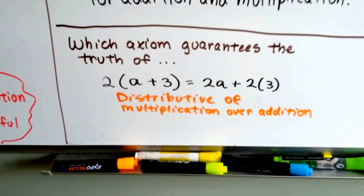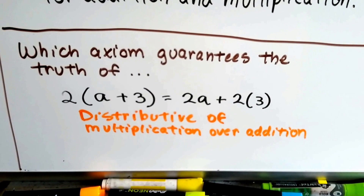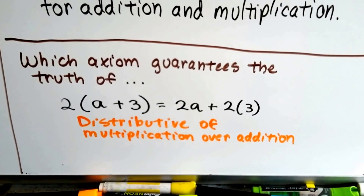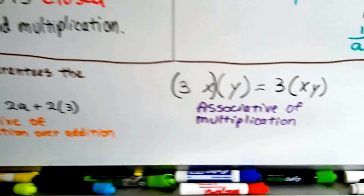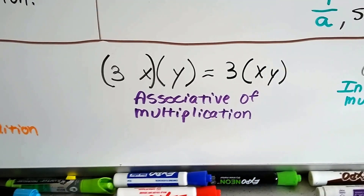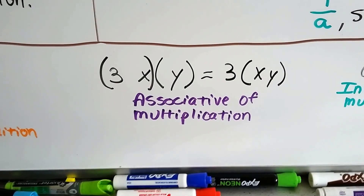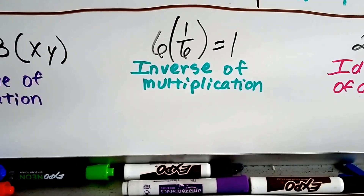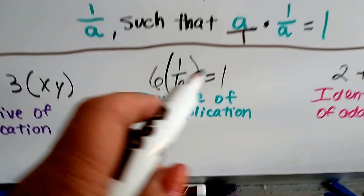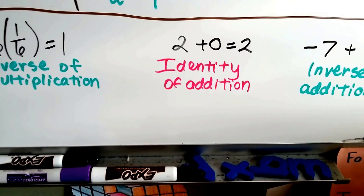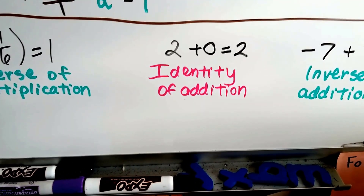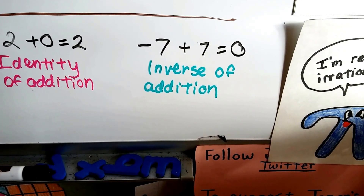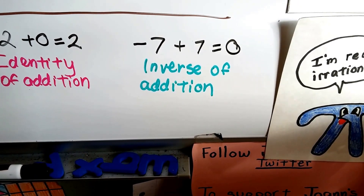So, which axiom guarantees the truth of this: 2(a + 3) = 2a + 2×3? That's the distributive property of multiplication over addition. The associative property of multiplication guarantees the truth of 3x × y = 3 × xy. And the inverse of multiplication guarantees that 6 times one-sixth equals 1, because we put 6 over 1 just like we did before. The identity property of addition guarantees the truth that 2 + 0 = 2, and the inverse property of addition guarantees that negative 7 plus 7 equals zero.